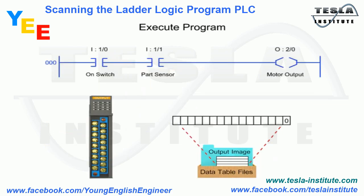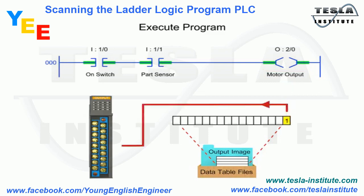In the next step of the scan cycle, the PLC executes the program one instruction at a time. The values of the output table are changed based on the status of the inputs.